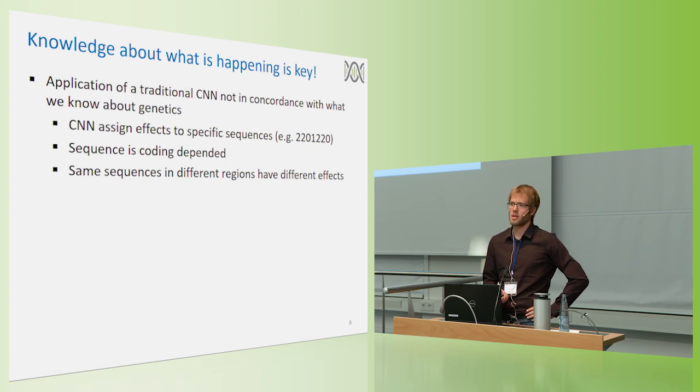But as in the traditional case of a convolutional neural network, this sequence would be assigned with the same effect in every different region. I would totally agree that when we were working on a base pair level, that could probably work. But in markers, which are coding dependent with probably some variation in between the markers, that's just something that isn't supposed to be better.